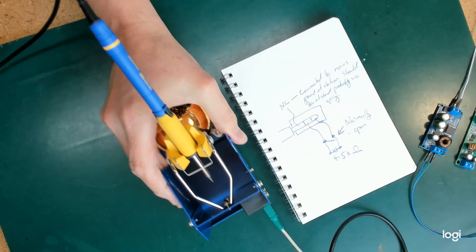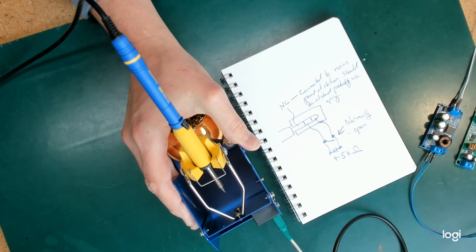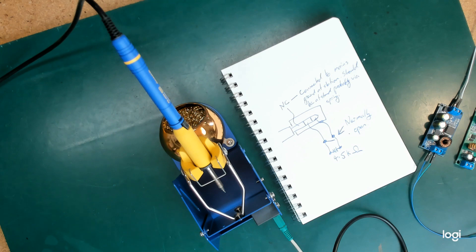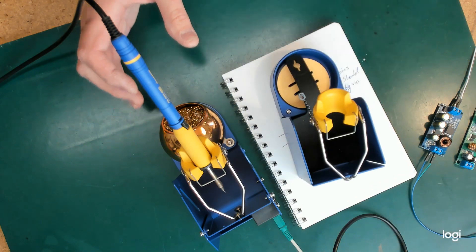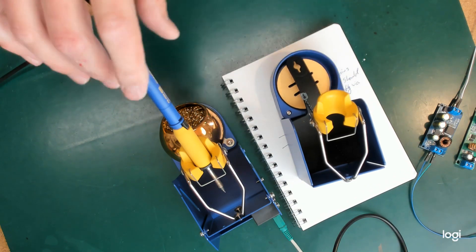This is my new soldering iron stand for my Hakko FX 950 soldering station. This stand, unlike this one which has no switch mechanism in it,